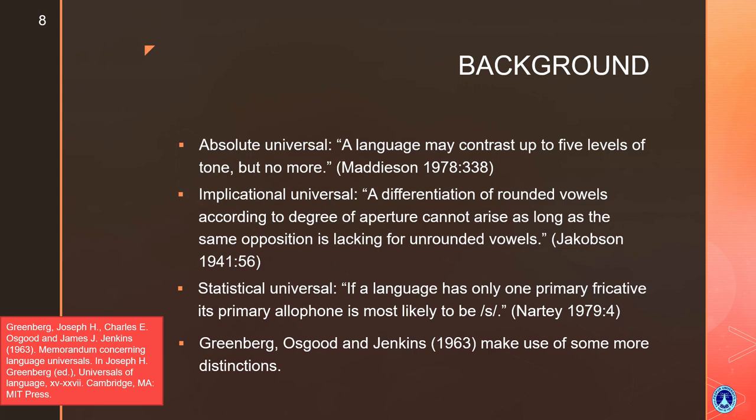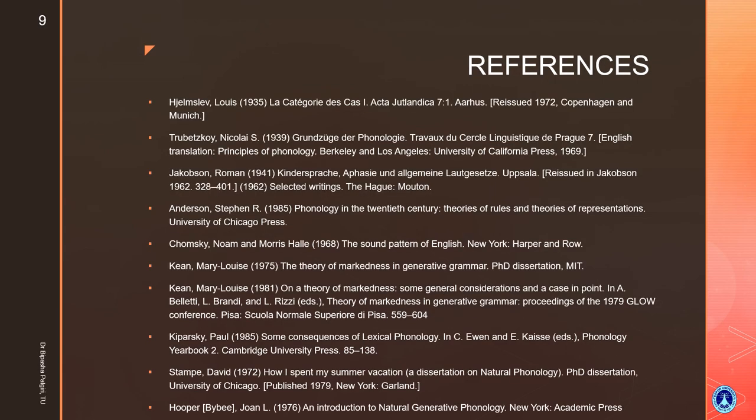So here are three distinct categories or types of universal patterns: absolute, implicational, and statistical. A composite reference list is provided in the slides. Thank you very much.